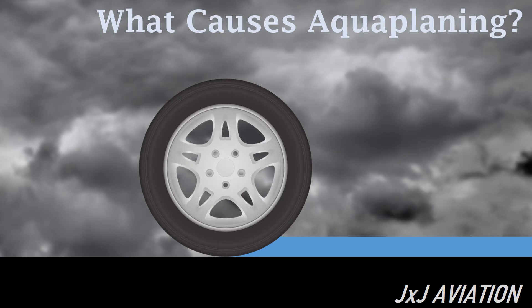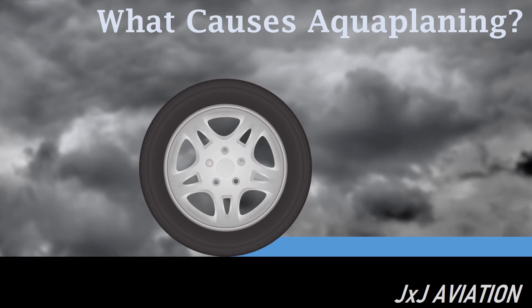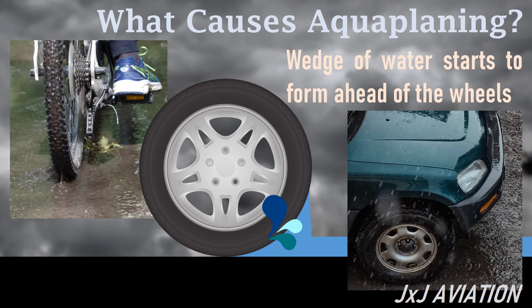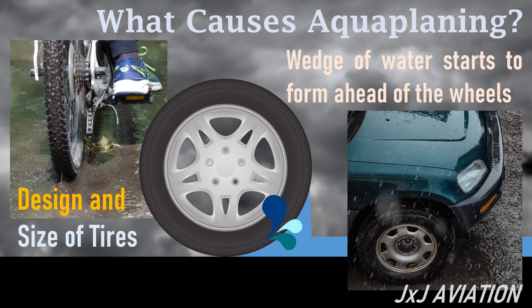As the speed of the vehicle increases, a wedge of water starts to form ahead of the wheels. The water starts accumulating ahead of the tires. If the tire is able to disperse the water, then the vehicle stays in contact with the surface. The ability to disperse the water depends on the design and the size of the tires.